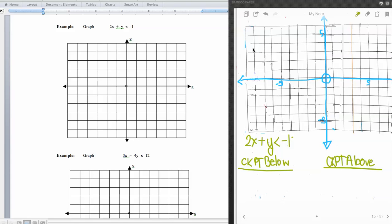Alright, this continues section 6.6, graphing linear inequalities in two variables, or solving linear inequalities in two variables, being the exact same thing. So we're going to do this one together, and then I'm going to want you to do 3x minus 4y is less than or equal to 12 on your own. So 2x plus y is less than negative 1.